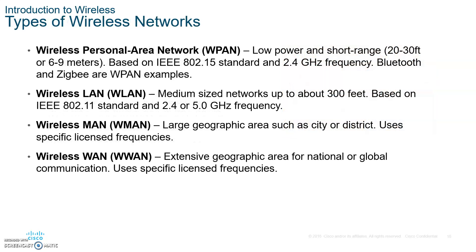Speed is coming — with 802.11ax nowadays it's going to be four times as fast as AC. We'll get to talk about that in a few. There are four categories in wireless networks, just like wired LAN: the Wireless Personal Area Network, the Wireless LAN (802.11), the Wireless MAN (Metropolitan Area Network), and the Wireless Wide Area Network. Please write those down.